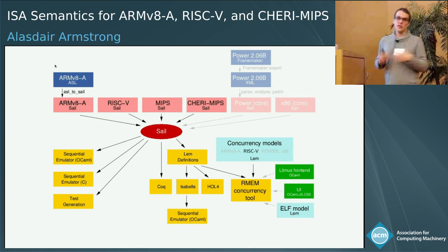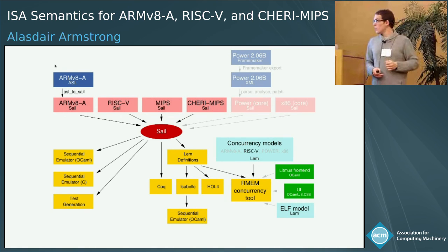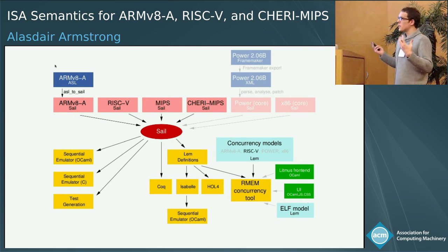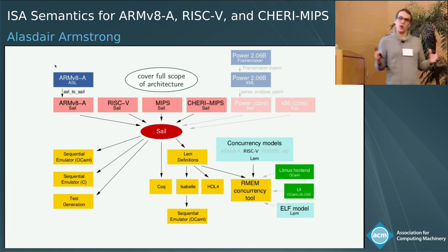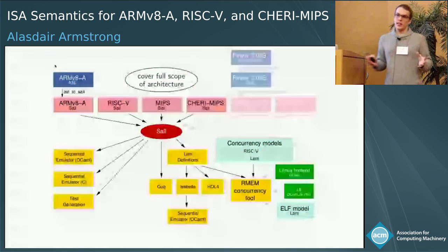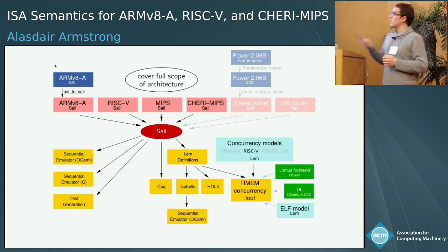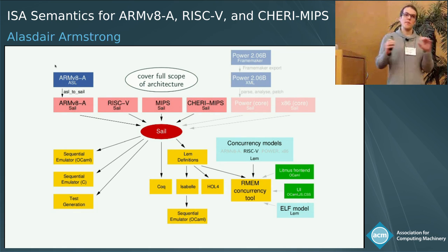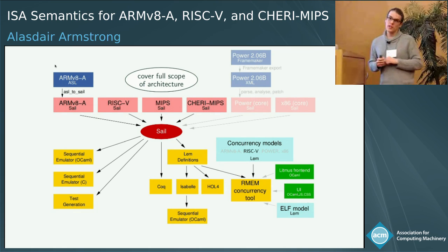At the top we have these different instruction set architectures: ARM, RISC-V, MIPS, CHERI-MIPS. Previously we've also done some work with Power and x86. We really want our models to cover the full scope of the architecture. For ARMv8-A, we generate it from the ARM specification using a tool we wrote called ASL to SAIL. There's a many-to-many problem where we have many architectures and many different uses, so we have a language called SAIL which bridges these two things.